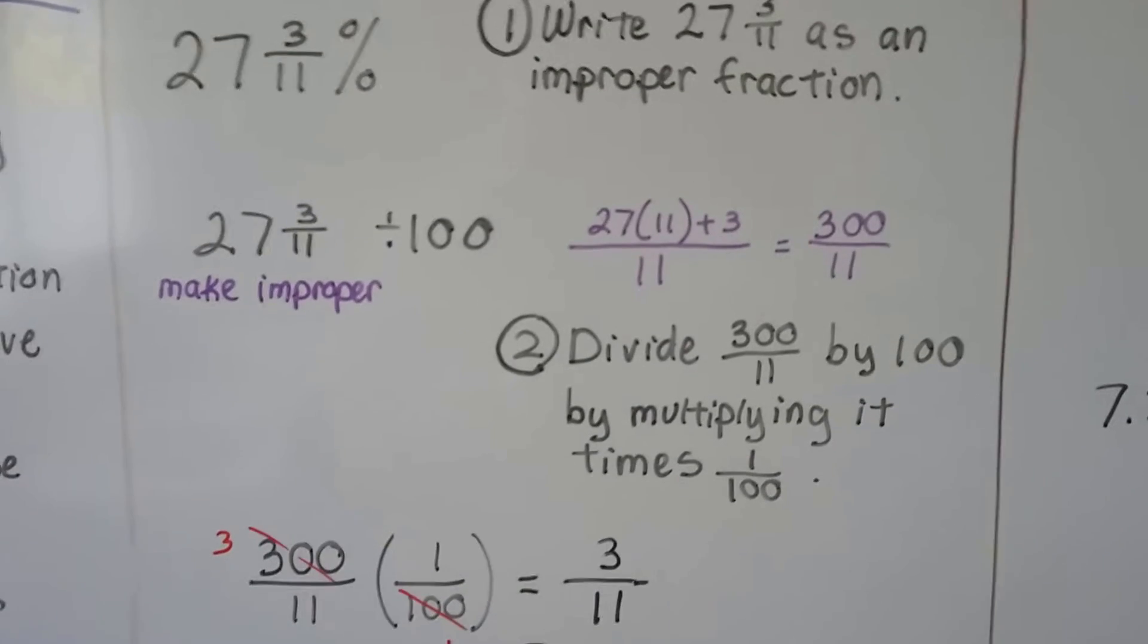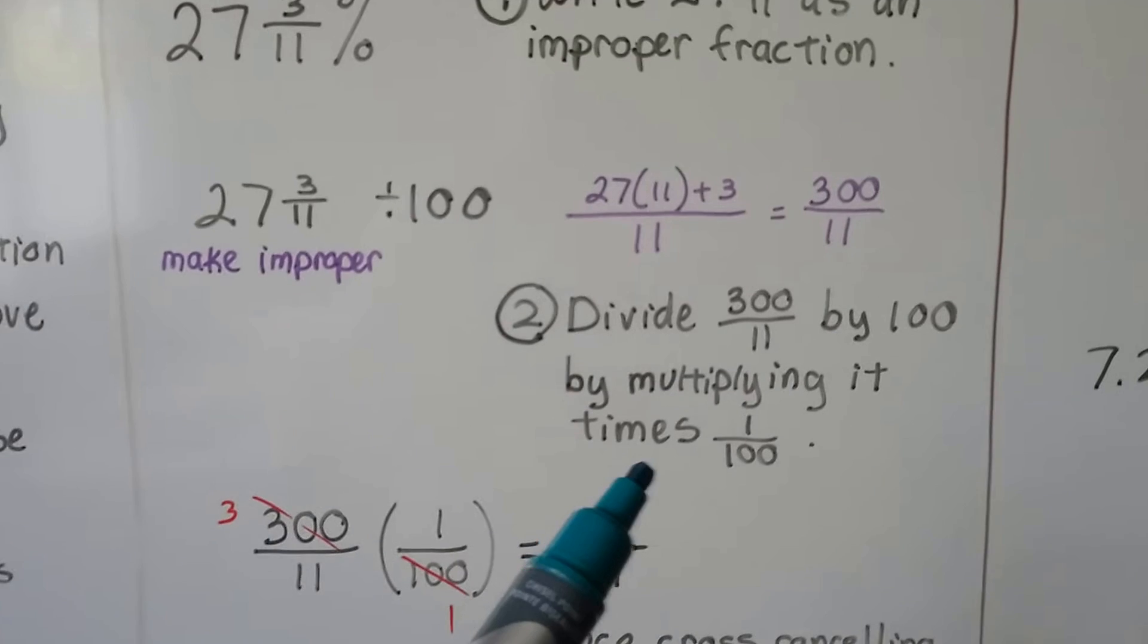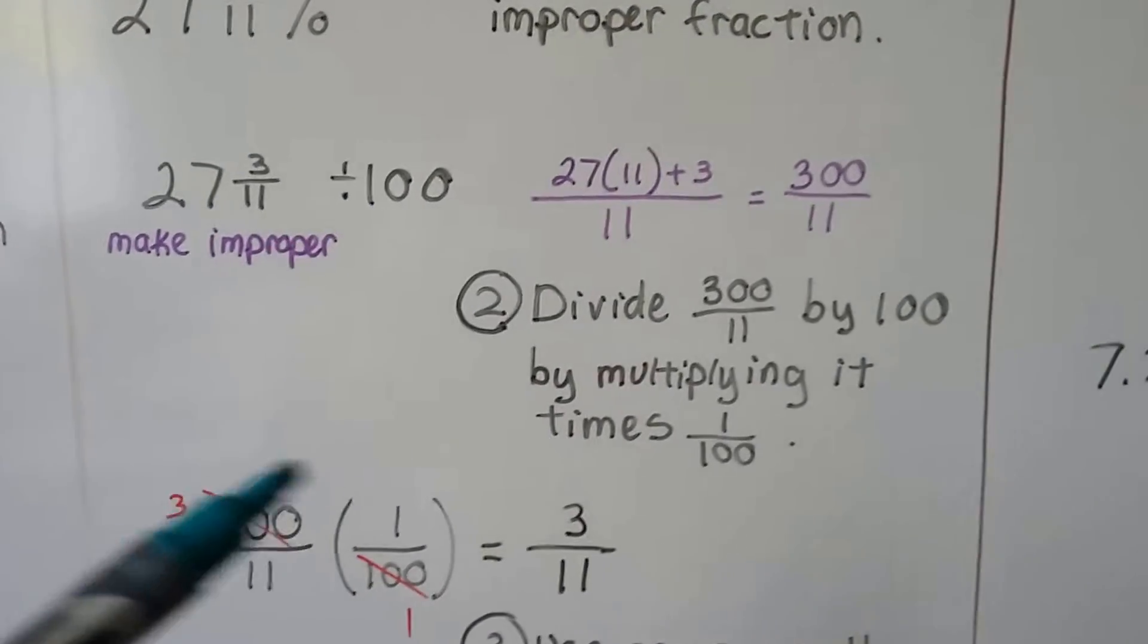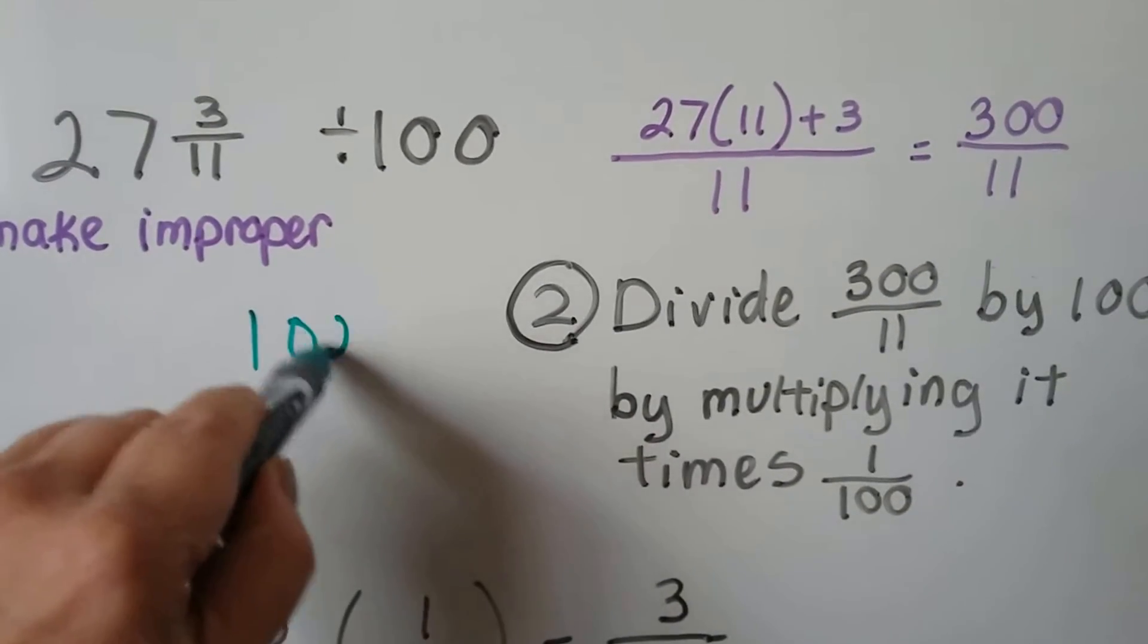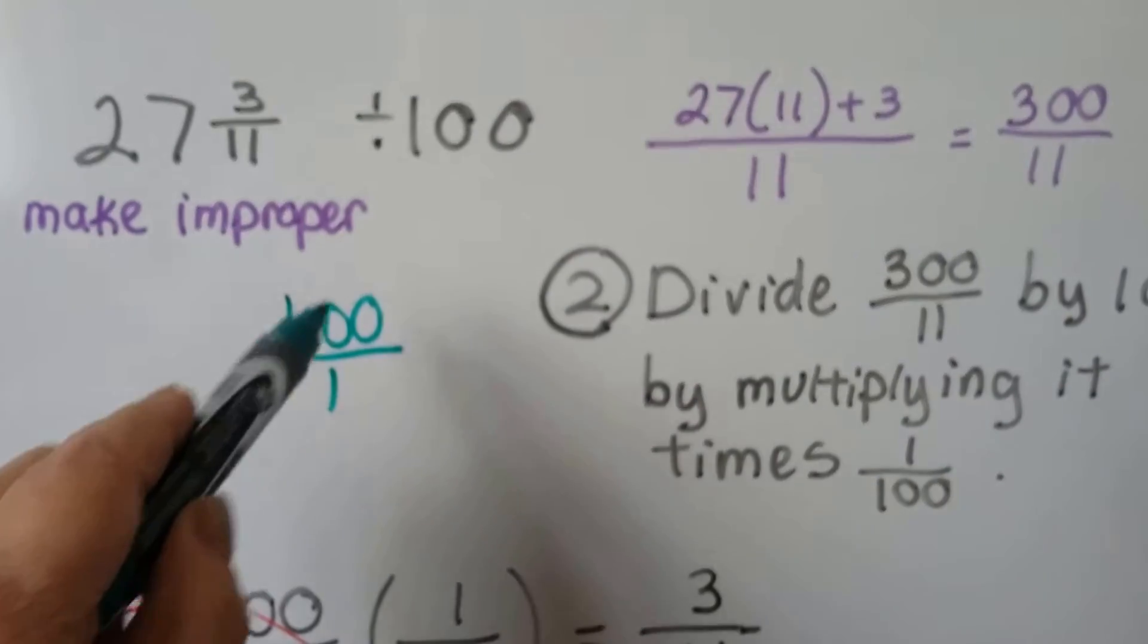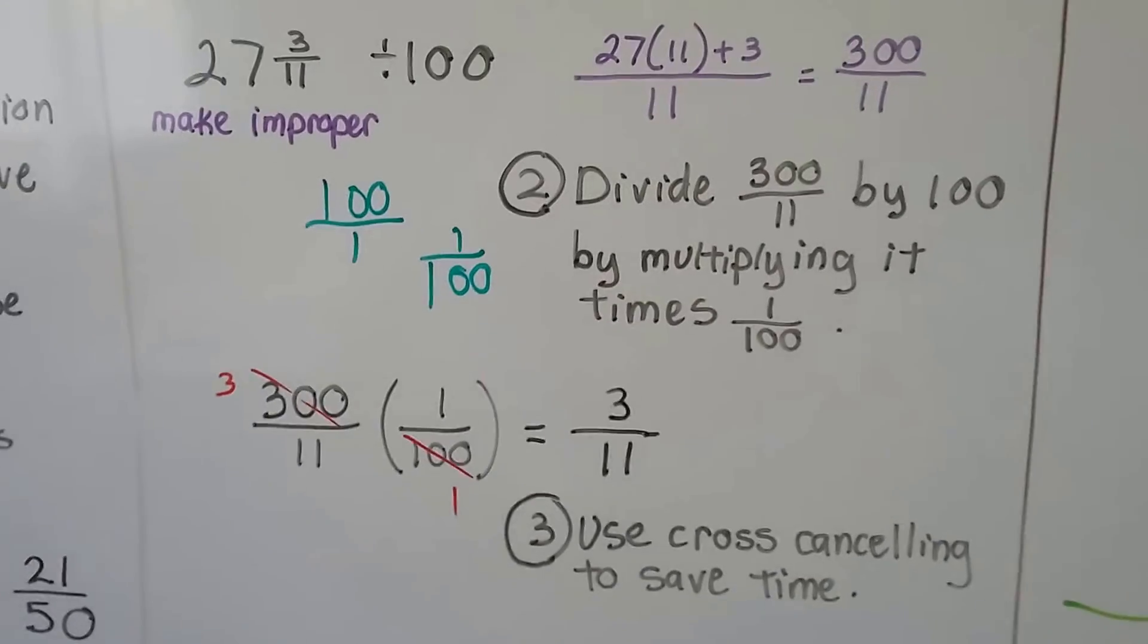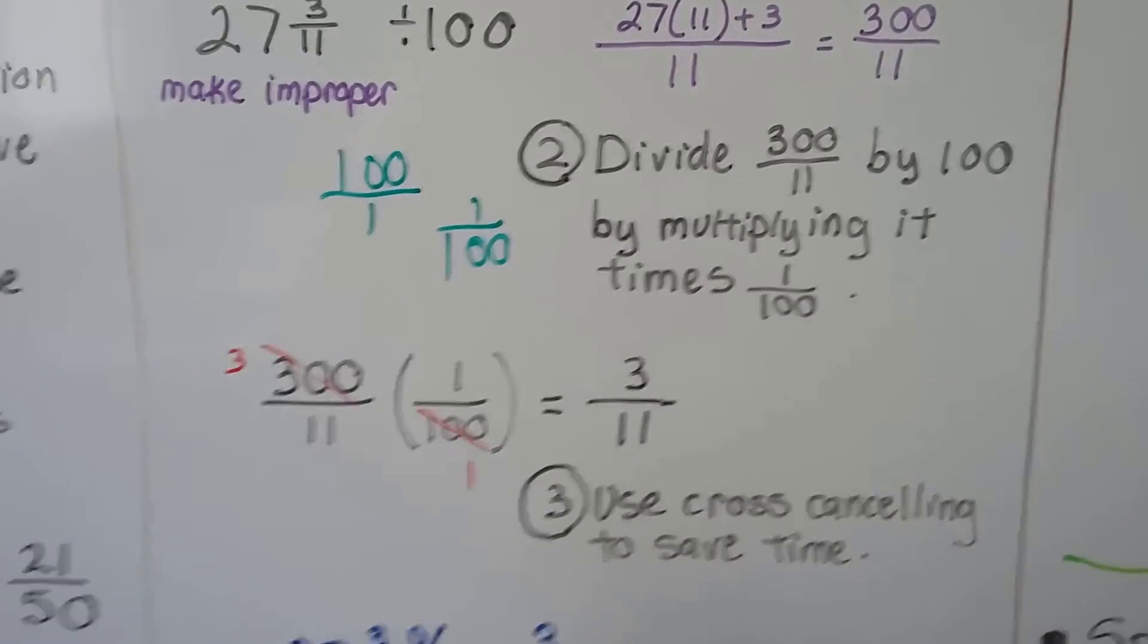Now we need to divide it by 100. So we're dividing that 300 over 11 by 100 by multiplying it times 1 over 100, one hundredth. Because we're dividing it, the way to divide is you multiply it and you turn this into a fraction by writing it over 1. And then when we change this to multiplication, this gets flipped around to its reciprocal as 1 over 100. We already learned about this.